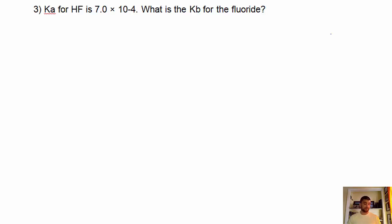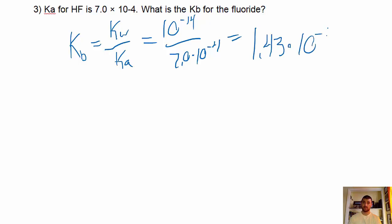And then we got number three. Ka for HF is 7.0 × 10^-4. What is the Kb for fluoride? Just the ion. So, again, we want Kb. It's going to equal the Kw over Ka. So it's 10 to the minus 14 all over 7.0 times 10 to the minus 4, which is going to give me the answer of 1.43 times 10 to the minus 11.